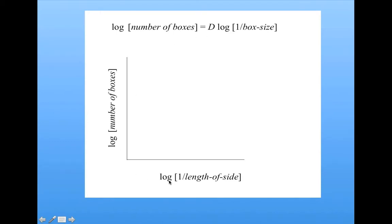If we plot it on a graph where the x-axis is the log of 1 over the length of the side, and the y-axis is the log of number of boxes, D would be the slope of that straight line.